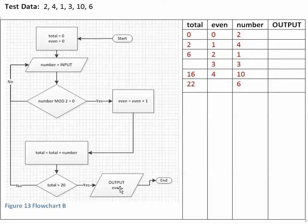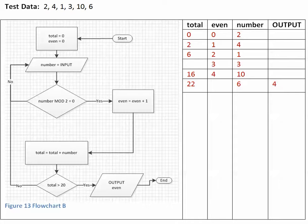We ask: is total greater than 20? The answer is yes. And we output the value of even. The current value of even is 4, and we output this value, which tells us that we had 4 even numbers: 2, 6, 10, and 6. And that's how to do this flowchart.